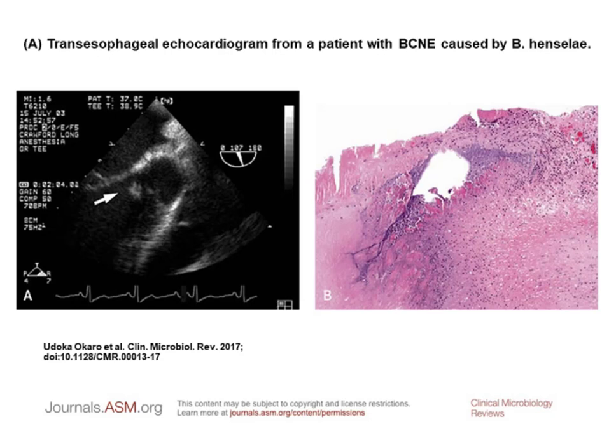Shown here is a transesophageal echocardiogram from a patient with bacterial culture-negative endocarditis caused by Bartonella henselae. In panel A, there is a bicuspid aortic valve with a left coronary leaflet almost entirely replaced by a large vegetation indicated by the arrow. On the right in panel B, a Gram stain of the patient shows extensive fibrosis and coccobacilli on the aortic valve that were confirmed to be Bartonella henselae. It is hard to make out the bacteria, but the fibrosis is certainly visible.